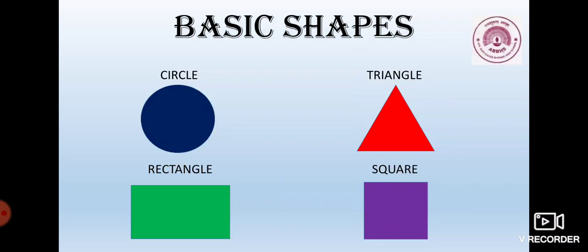Basically, there are 4 basic shapes: circle, triangle, rectangle, and square. These are called basic shapes.